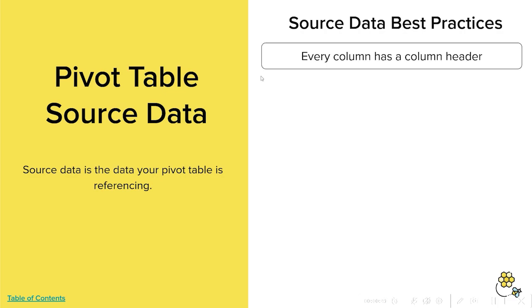First, you need to make sure that every column has a column header. Without column headers, Excel will not be able to pivot your data.